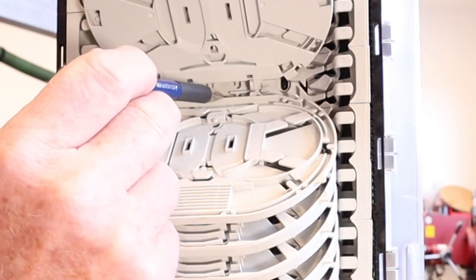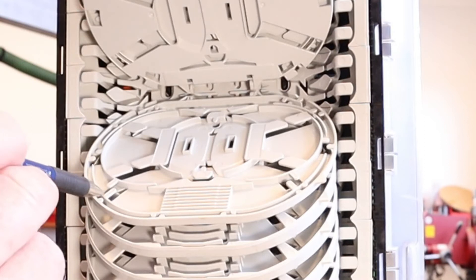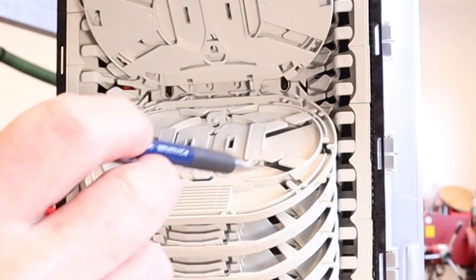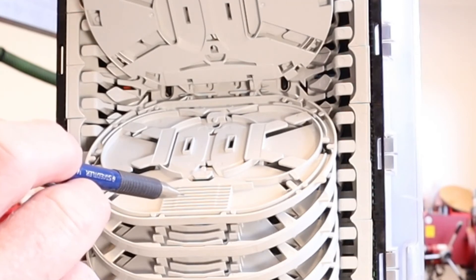You need to make sure you go behind those tabs and then up onto the tray here where you can store your surplus fiber and then go into the splice protector here.